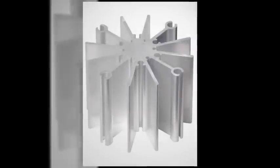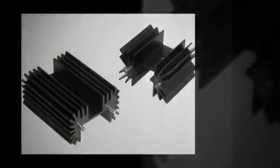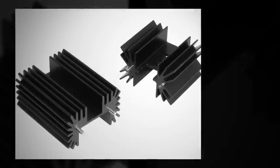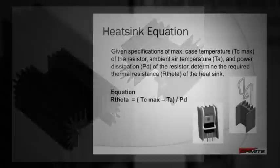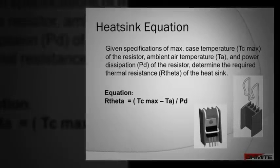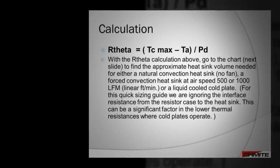When choosing a heat sink for industry standard package sizes, it's important to consider temperature limits. We'll now use this equation along with a chart to find an approximate heat sink volume. The maximum case temperature, ambient air temperature, and power dissipation of the resistor are used to find the required thermal resistance of the heat sink.